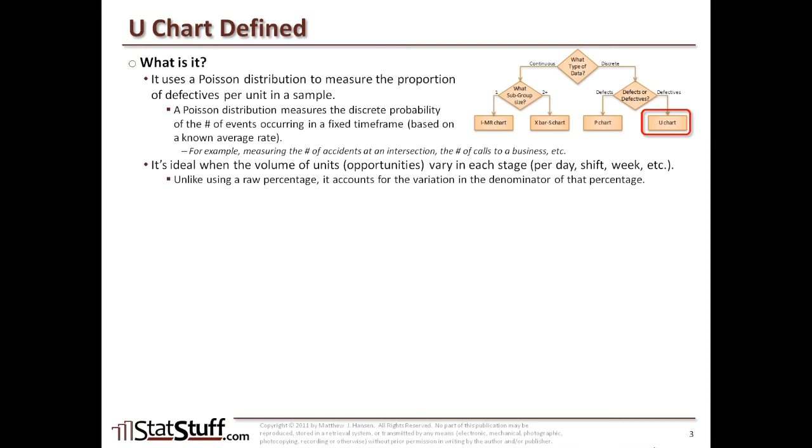Unlike using raw percentage values, it accounts for the variation within the denominator of that percentage or typically within the volume. As an example, you might have two different samples, each yielding a 10% defect rate, and they might seem to be the same. However, it would make a difference if the first sample was for a particular weekend day with 100 total units in volume, so 10% means there were 10 defects. And you might have a second sample based off of a weekday where you have higher volume like 1000 units and 100 defects on that day. Even though you have 10% as the defective rate for those two different samples, the fact that one value has a much higher volume in one day than another is what's being accounted for within this type of test.